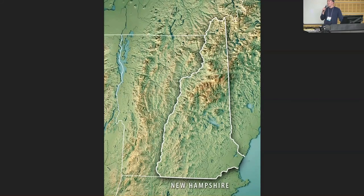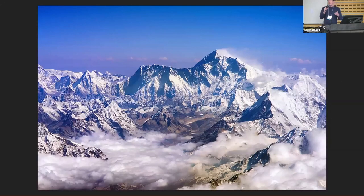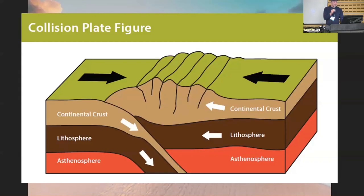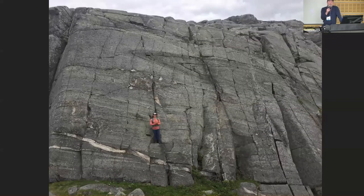When we look at New Hampshire's mountains, what are we looking at? We're looking at the roots of the ancient Acadian Mountains. The Acadian Mountains may have been more like the Andes than the Himalayas, but we should picture a mountain range like that around here a long, long time ago. Because of the collision and the sheer weight of the mountains, there was a lot of action in what's called the roots of the mountains — a lot of metamorphosis, heat, and pressure.